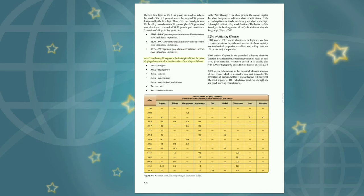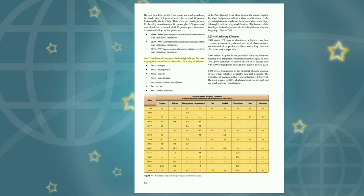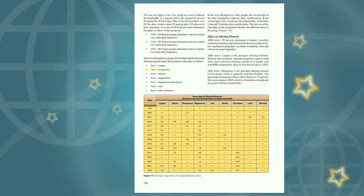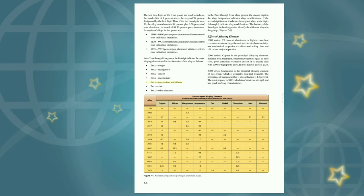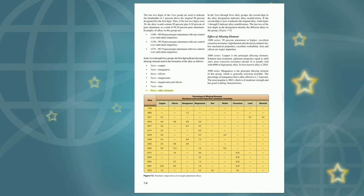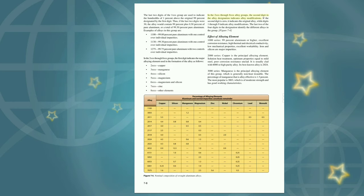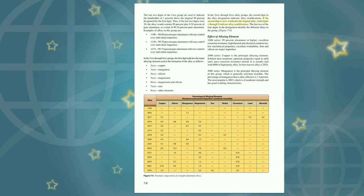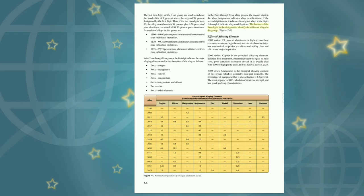In the 2XXX through 8XXX groups, the first digit indicates the major alloying element used in the formation of the alloy. The second digit indicates alloy modifications—if zero, it indicates the original alloy; digits 1 through 9 indicate alloy modifications. The last two of the four digits identify the different alloys in the group.